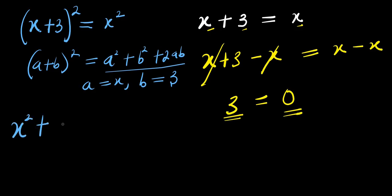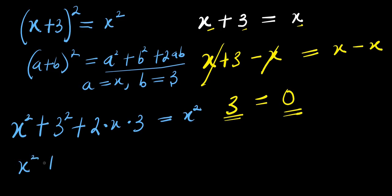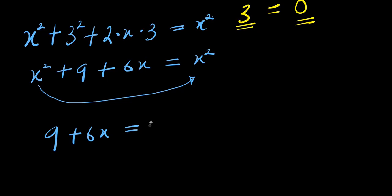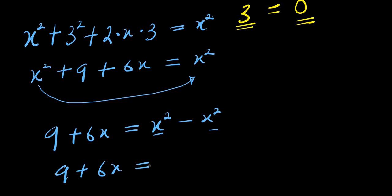I have x squared plus 3 squared plus 2 times x times 3 equals x squared. So from here, I have x squared plus 2 times x times 3, this is 6x, and this equals x squared. So from here, I can decide to move x squared across, I will have 9 plus 6x equals x squared minus x squared, which is 0. I have 9 plus 6x equals 0.